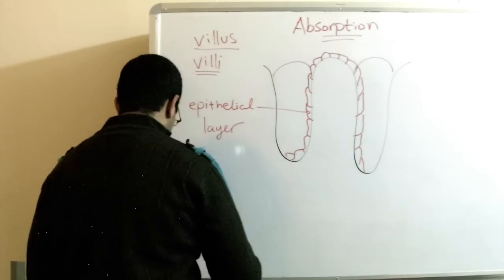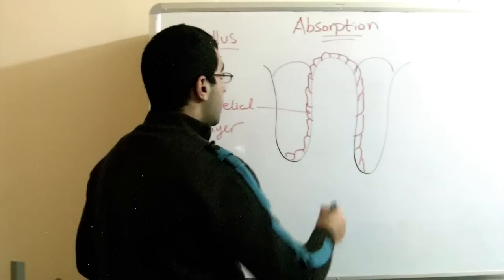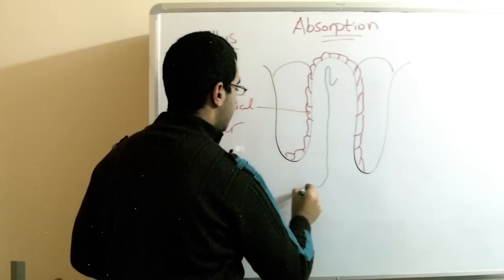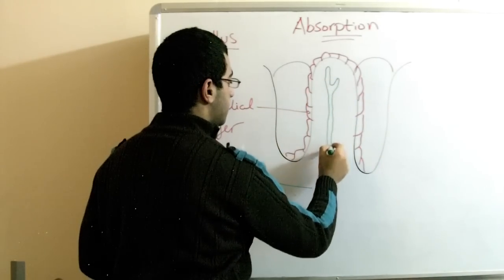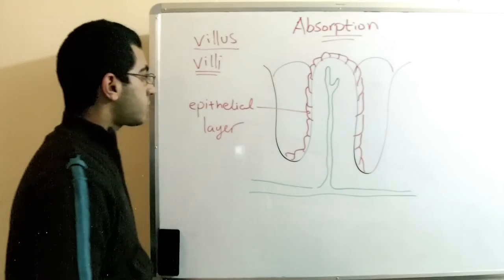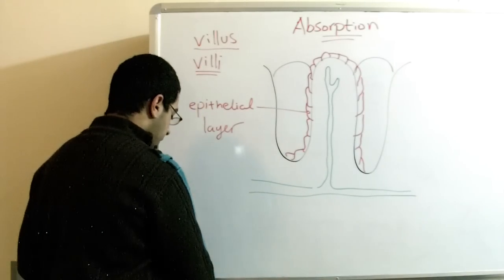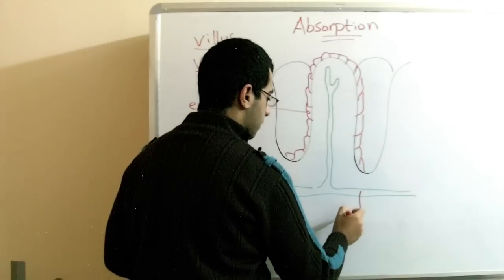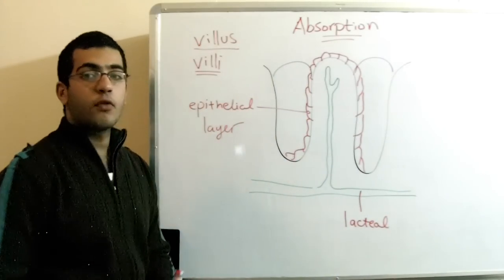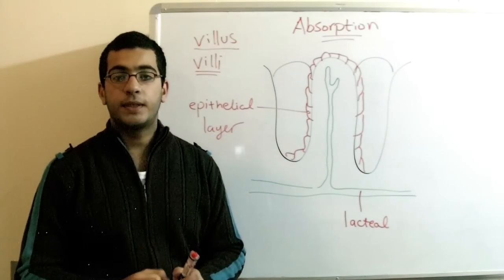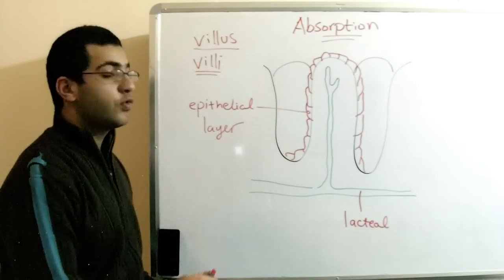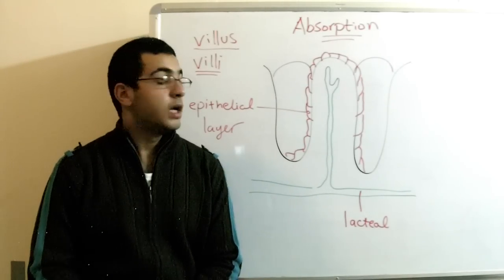The next more important part is when the food moves from the outside medium to the inside of the villus. Here there is something which is called a lacteal. It looks like this. This lacteal is formed of something called lymph. This lymph is used to carry the fatty acids and glycerol, as we will mention in the next part.